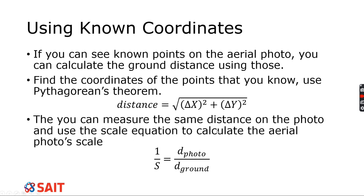To find that scale, we take the ground distance calculated from GPS coordinates. Then we come back and find those same two points on the actual aerial photo — point one has x and y, point two has x and y. We identify them, take a ruler, and measure between them. That measured distance is your distance on the photo, while the calculated distance is your ground distance using real-world coordinates. Then you can calculate the aerial photo scale.